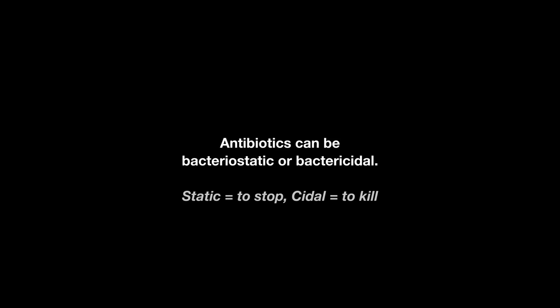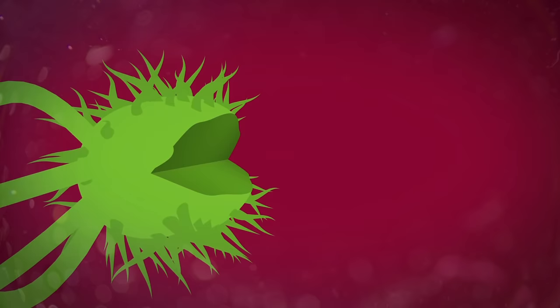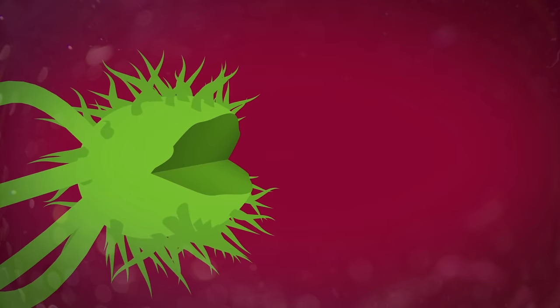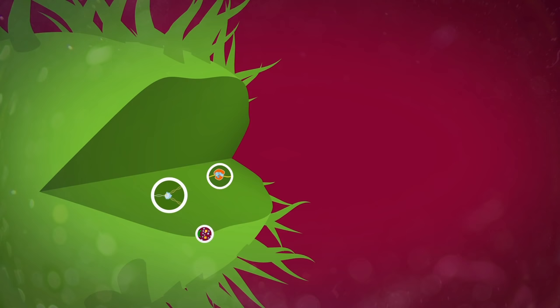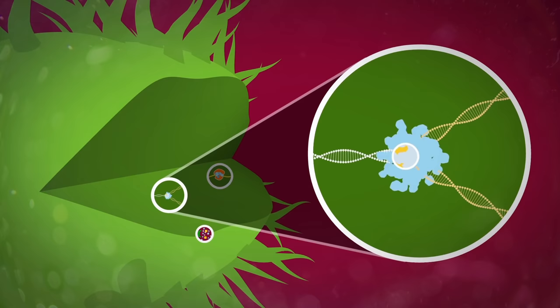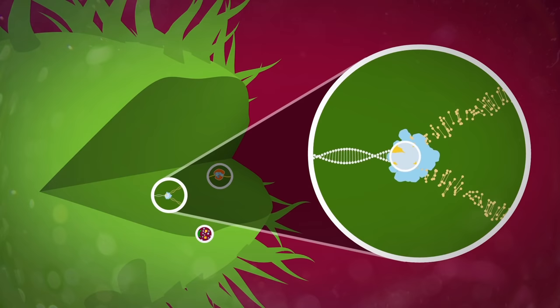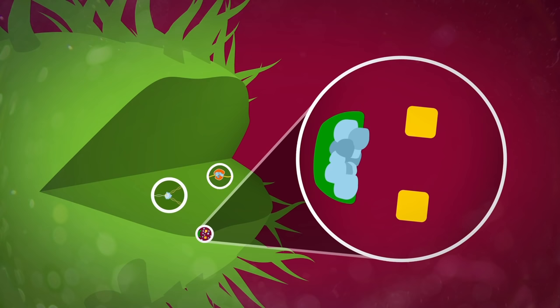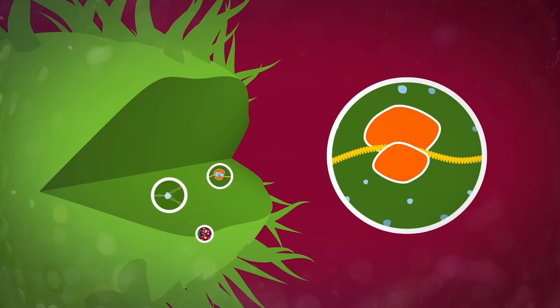Antibiotics can be bacteriostatic or bactericidal. Bacteriostatic antibiotics slow the growth of bacteria by interfering with the processes the bacteria need to multiply. These processes include DNA replication, metabolism, e.g. enzyme activity, and protein production.